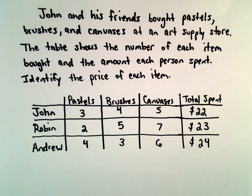Okay, so John and his friends bought some art supplies that are summarized by the table, showing the number of each item and the total spent. We want to find the price of each item.